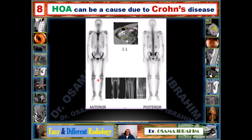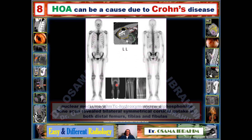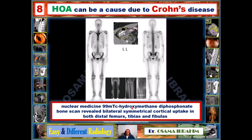Regarding bone scan findings in HOA: the bone scan using technetium-99m hydroxymethylene diphosphonate (HDP) as tracer shows bilateral symmetrical cortical uptake in the posterior distal femur and also tibia and fibula. This uptake is consistent with the periosteal reaction seen on radiographs. If the patient has an underlying condition such as Crohn's disease, these findings should be considered as secondary hypertrophic osteoarthropathy.